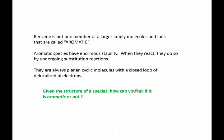Benzene isn't just an exceptional molecule — it's actually one member of a larger family of molecules and ions that we call aromatic. They have certain properties in common: they all have enormous stability; when they react, they do so by substitution reactions, not addition. They are all planar cyclic molecules that have a closed loop of delocalized pi electrons, and there are quite a few members of this important family.